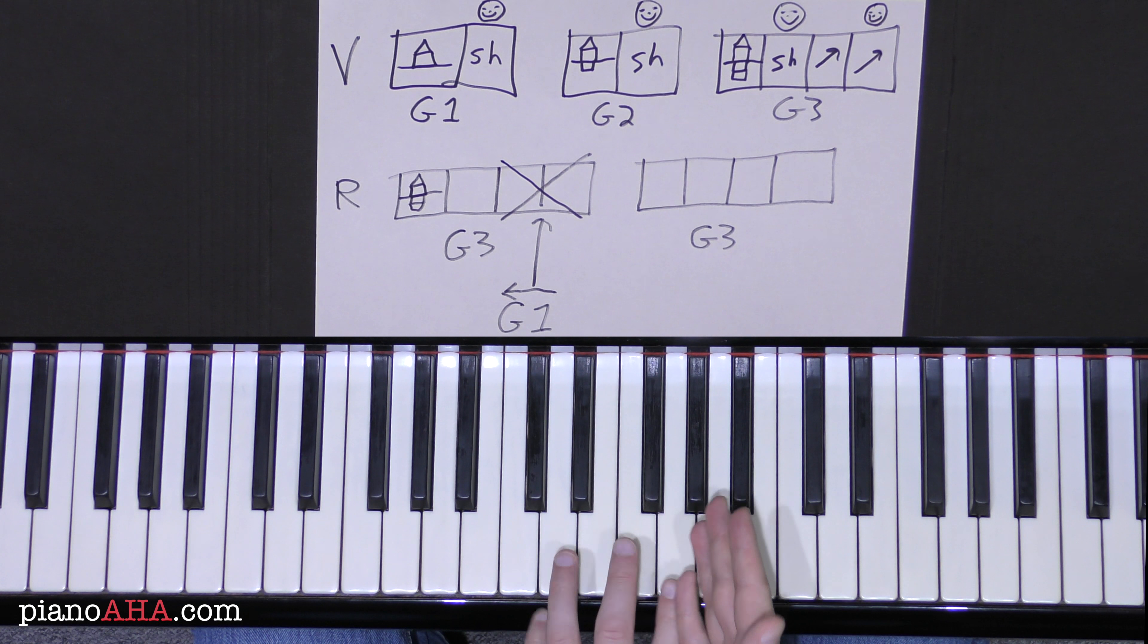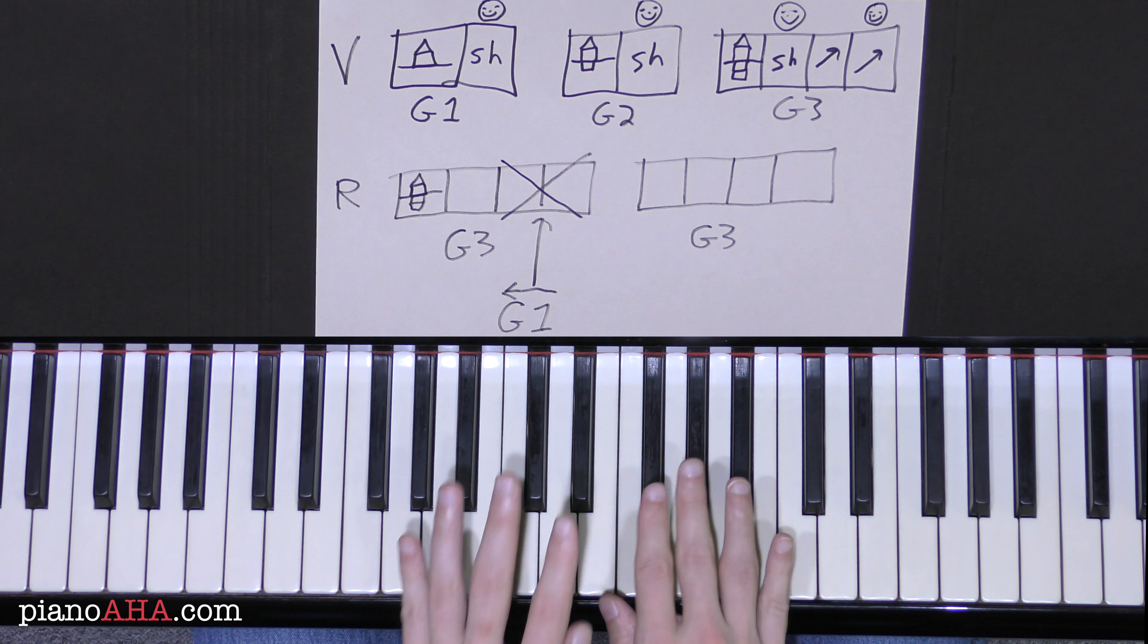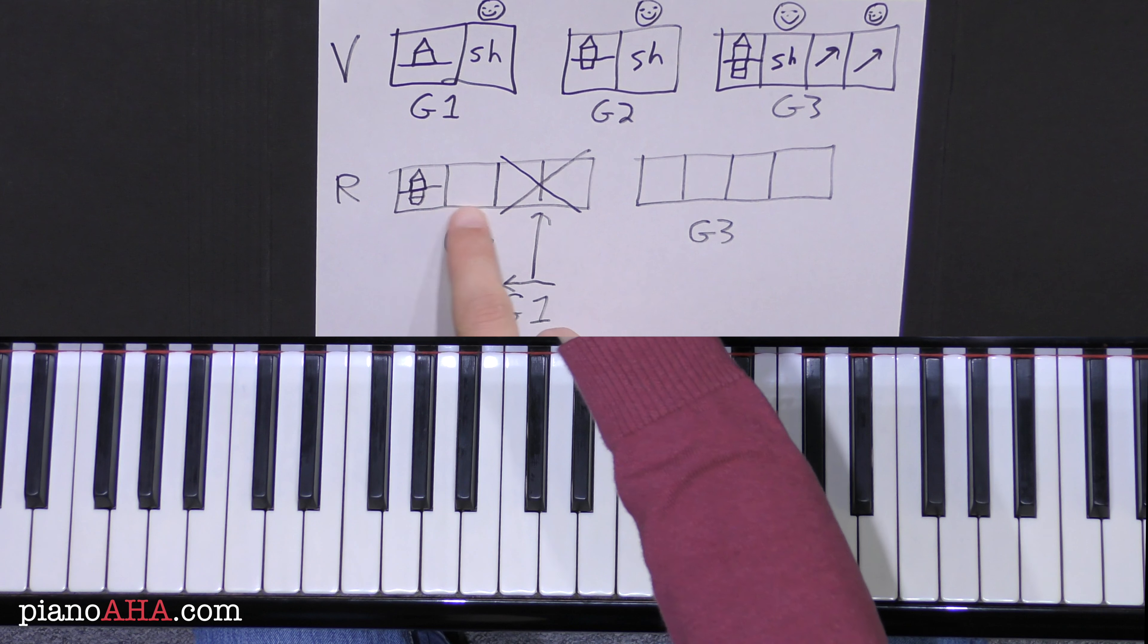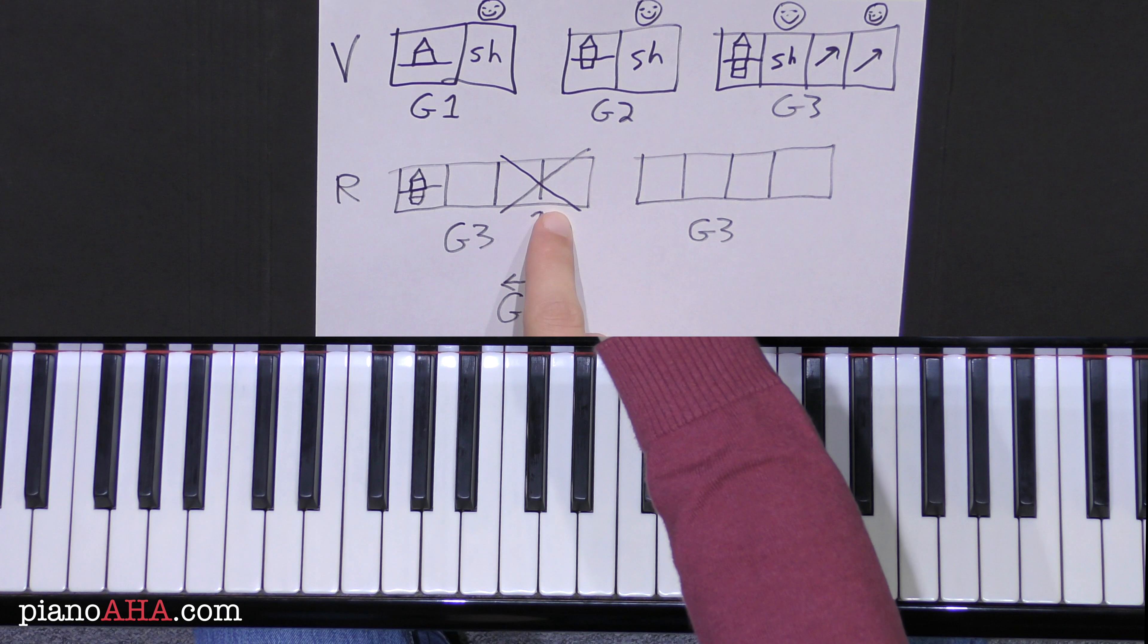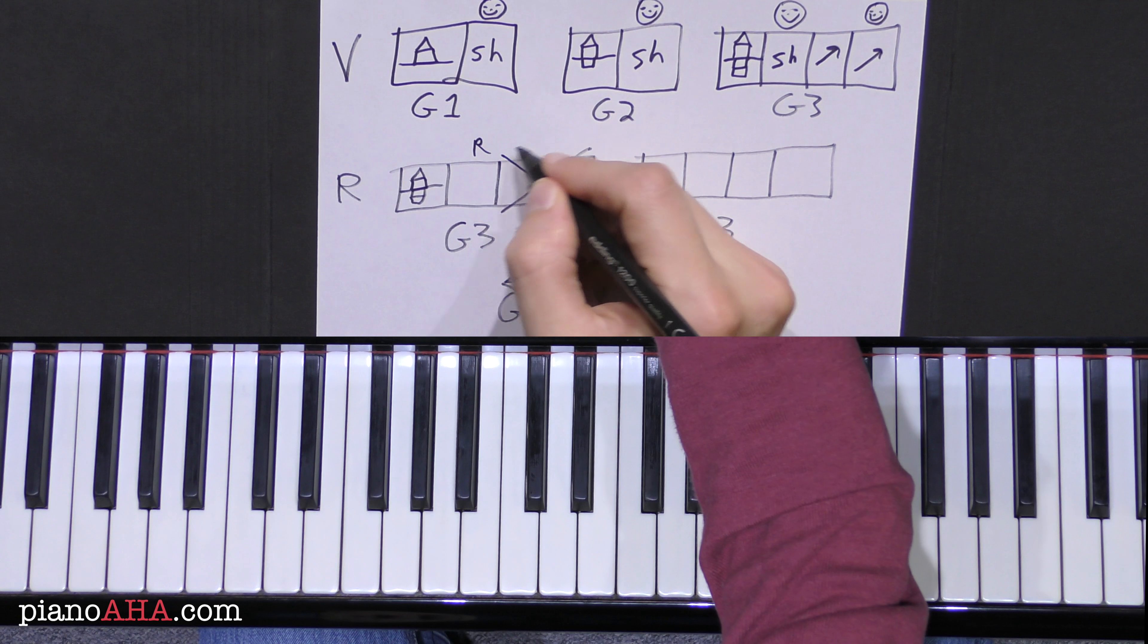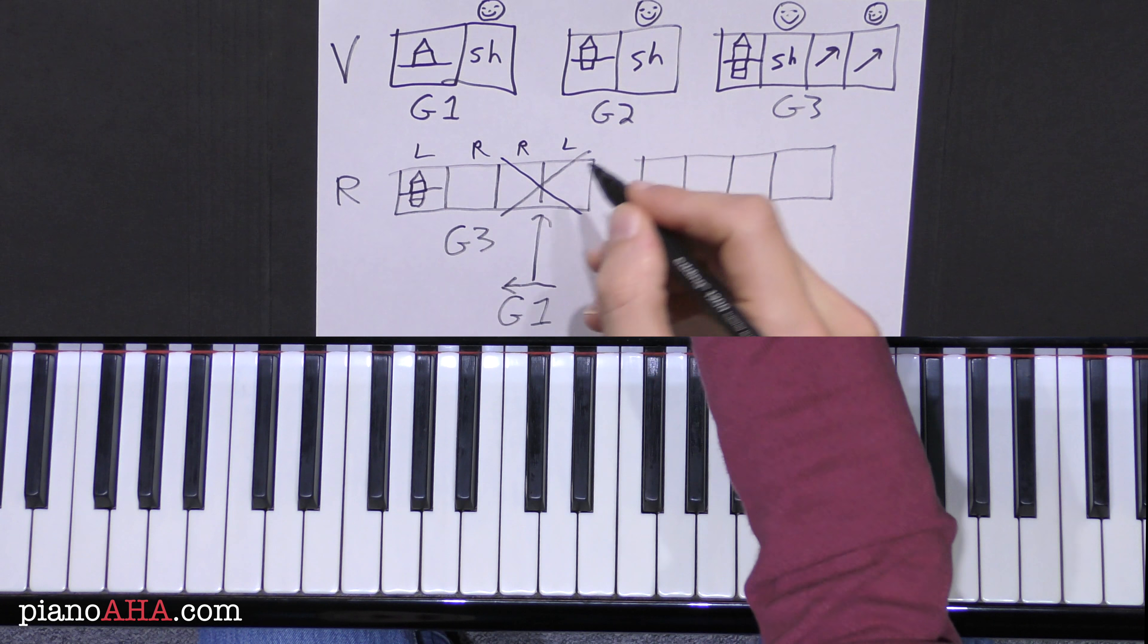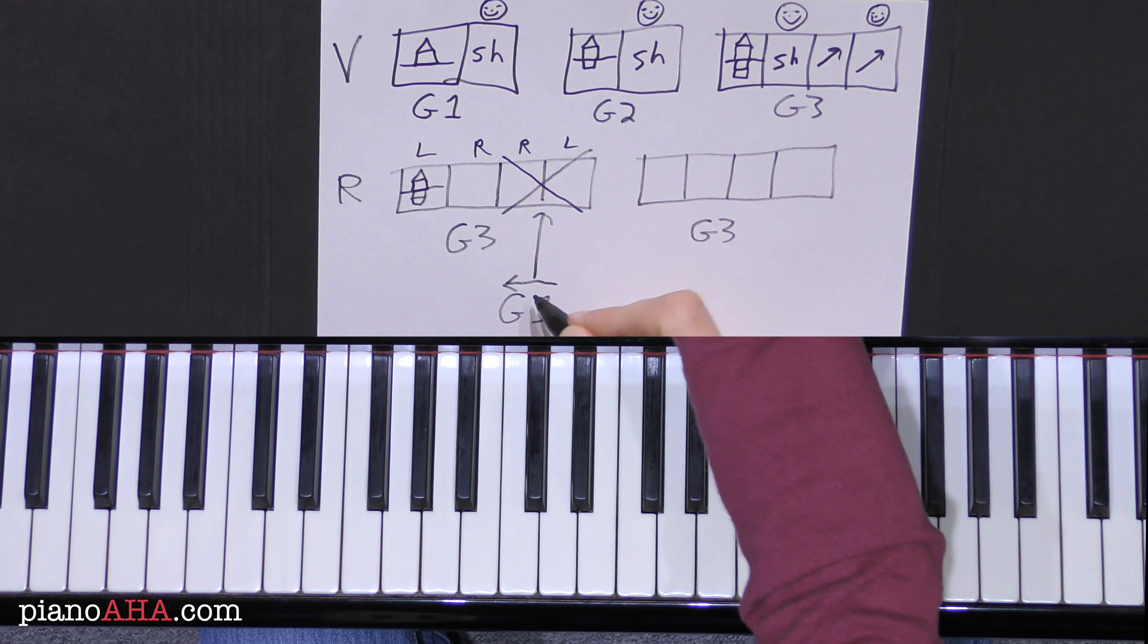And you'll notice here too that the hands are always alternating. Except for here where the one exception is. There does happen one time that I'm playing the right hand twice in a row since we're playing this group backwards.